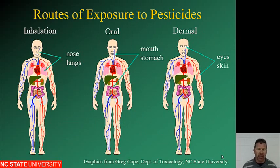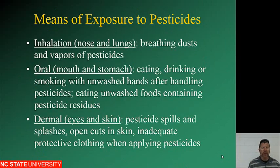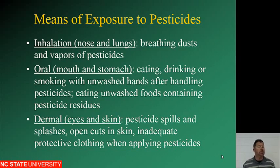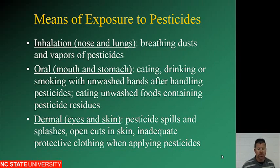Routes of exposure: inhalation, oral, and dermal. Inhalation is nose and lungs. Oral is mouth to the stomach. Dermal is your skin and through your eyes. Inhalation means breathing dust and vapors. Oral exposure comes from eating, drinking, smoking, or not washing your hands. Dermal exposure includes contacting the eyes or skin, pesticide spills and splashes — especially when you're mixing that concentrate — open cuts in the skin, and inadequate protective clothing when applying a pesticide. Think about the example of weeding, cutting your legs, and then spraying pesticides and getting a drift or mist into the wound.